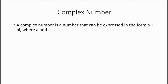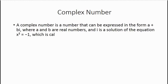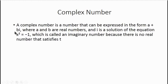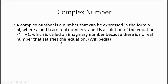So what is a complex number? According to Wikipedia, a complex number is a number that can be expressed in the form a + bi, where a and b are real numbers and i is a solution of the equation x² = −1, which is called an imaginary number because no real number satisfies this equation. You can only truly understand complex numbers if you are a good mathematician.